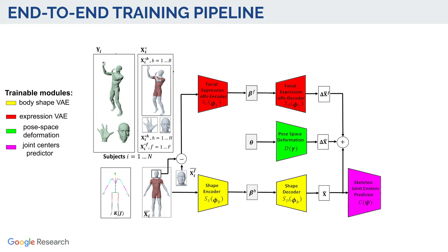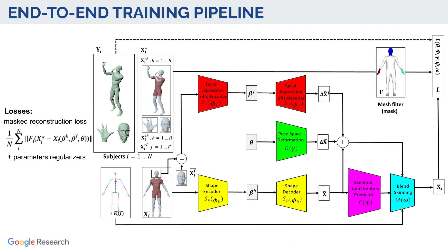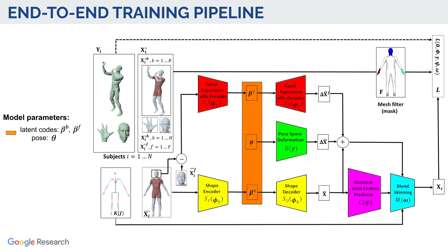The model also includes a joint center predictor based on a sparse regressor and trainable skinning weights. We formulate a filtered reconstruction loss that integrates both full-body scans and close-ups for face and hands, masked accordingly in order to fuse all data simultaneously. Following training, our generative human models are parameterized by latent codes beta-b and beta-f for shape and facial expressions, and kinematic state theta.